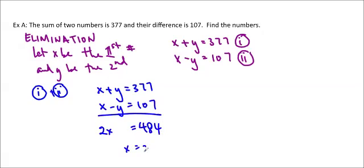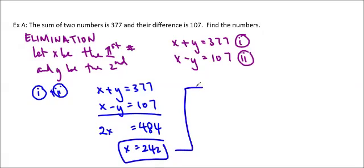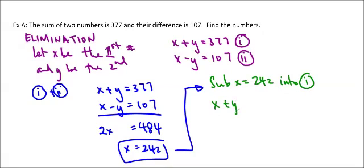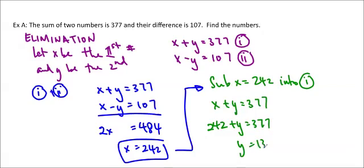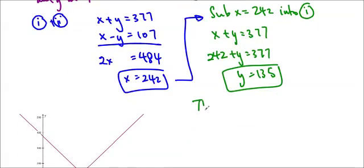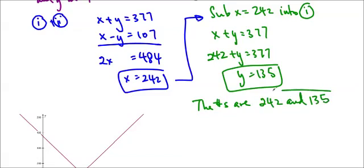So x equals 242. Then I substitute x equals 242 into equation one — it doesn't matter which equation you use. So x plus y equals 377; substituting, 242 plus y equals 377, giving y equals 135. The numbers are 242 and 135.